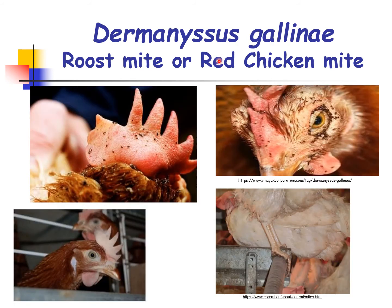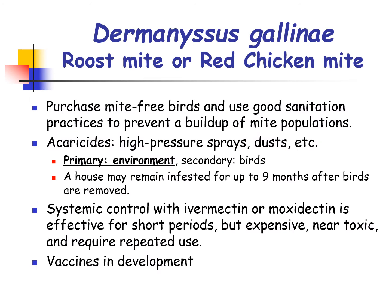This diagram shows the clinical manifestation of infestation with Dermanyssus gallinae. For prevention, control, and treatment, it is important to purchase mite-free birds and use good sanitation practices. Acaricides can be used through high-pressure sprays and dust, applied primarily through the environment and secondarily through the birds. A house may remain infested for up to nine months after birds are removed. Systemic control with ivermectin or moxidectin is also effective for short periods but is considered expensive, toxic, and requires repeated use. Vaccines for this mite are in development.